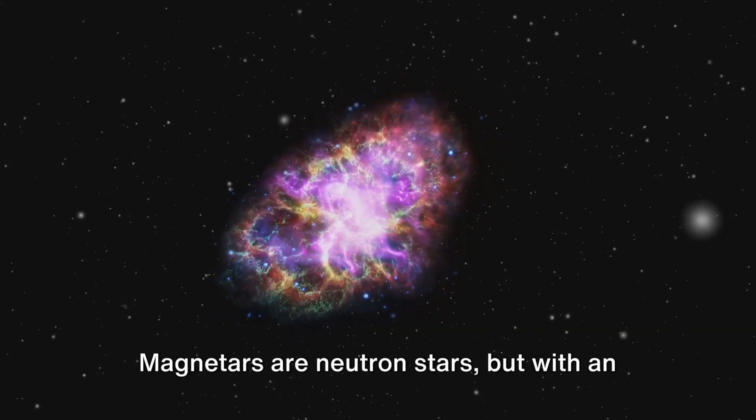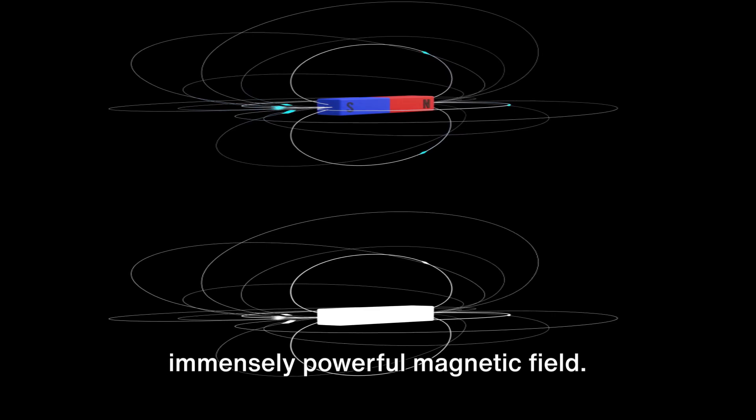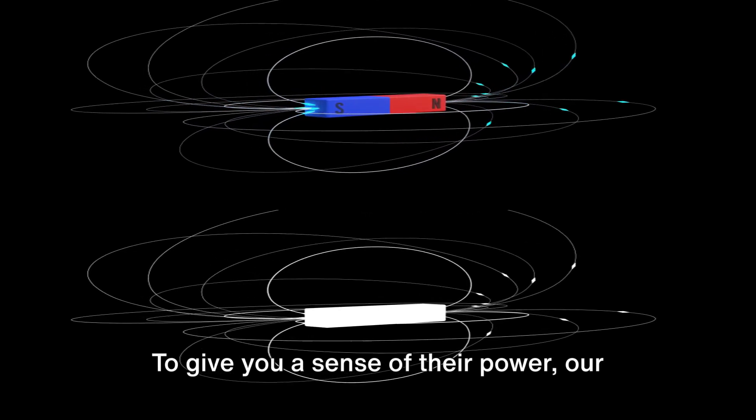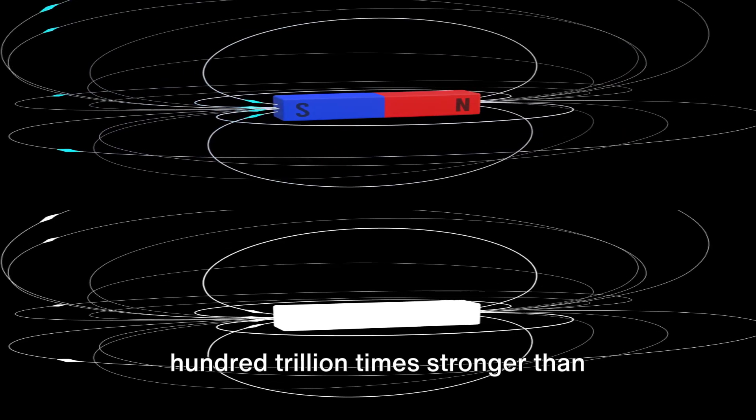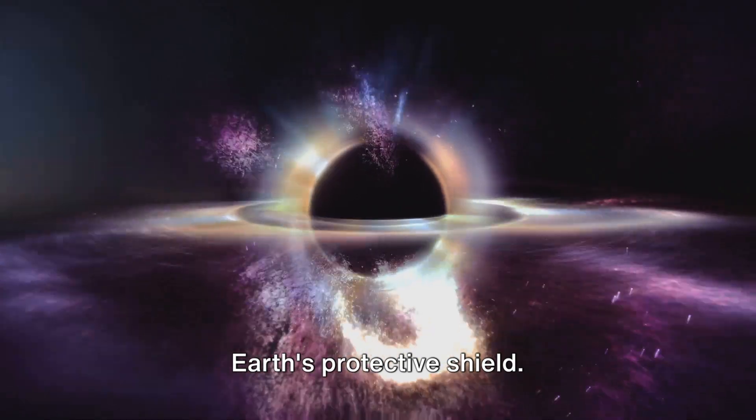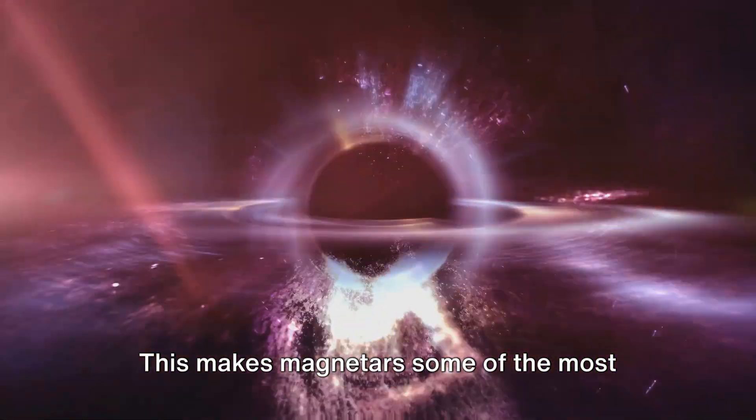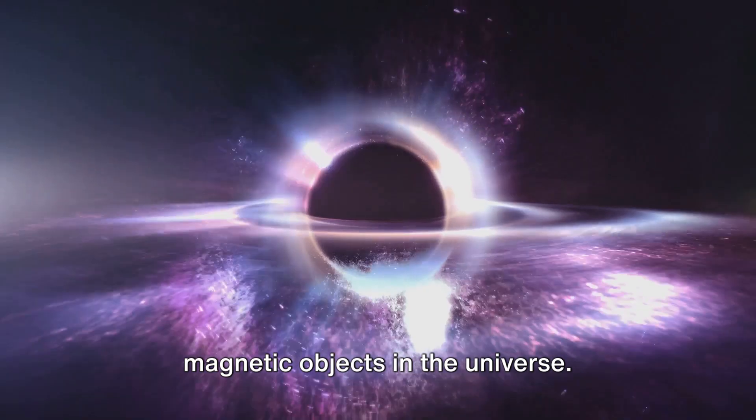Magnetars are neutron stars, but with an immensely powerful magnetic field. To give you a sense of their power, our zombie star's magnetic field is about 100 trillion times stronger than Earth's protective shield. This makes magnetars some of the most magnetic objects in the universe.